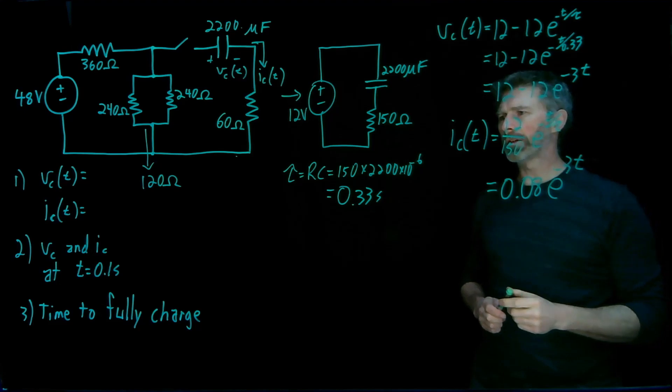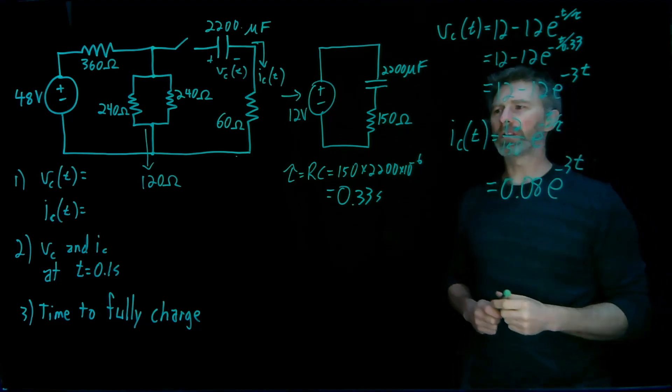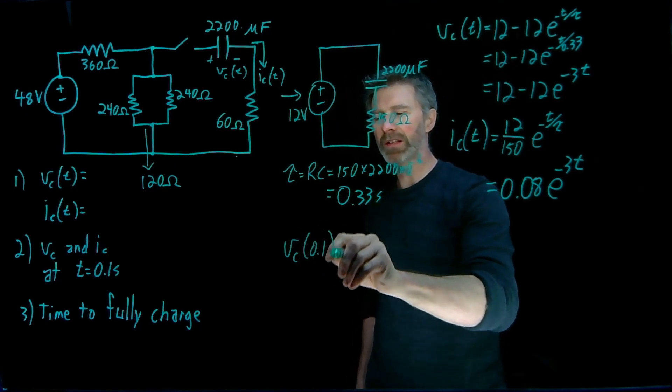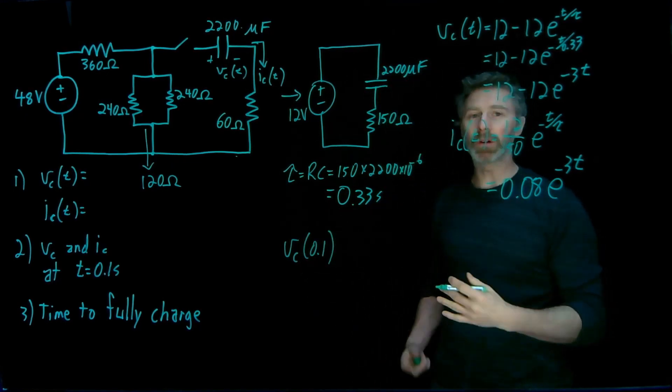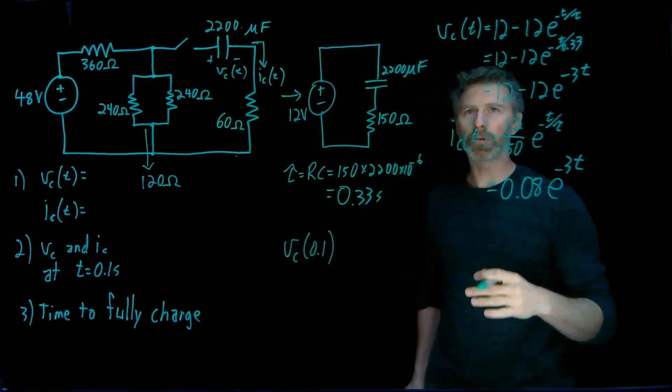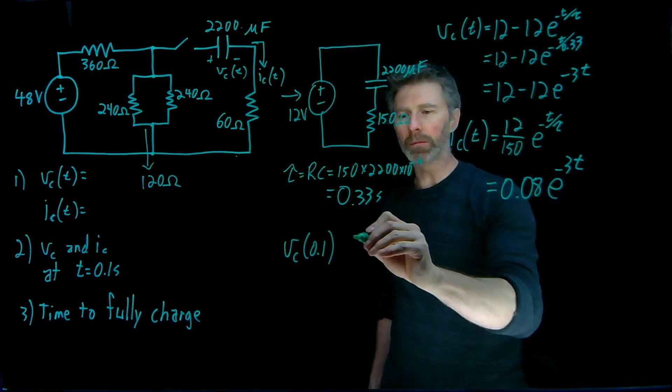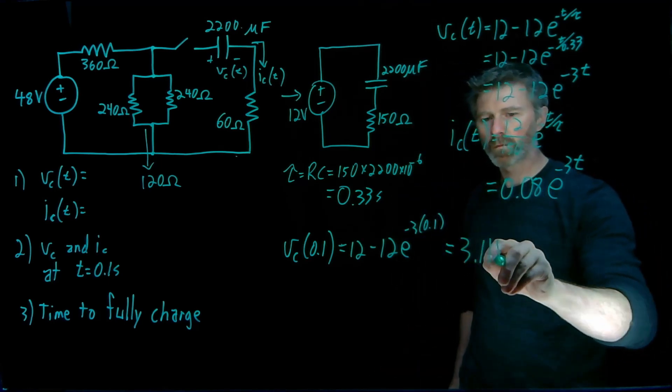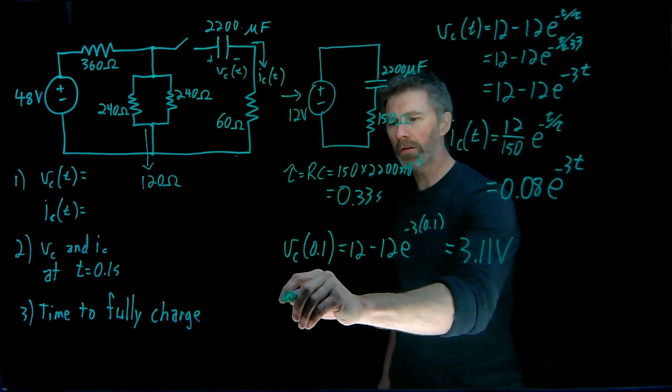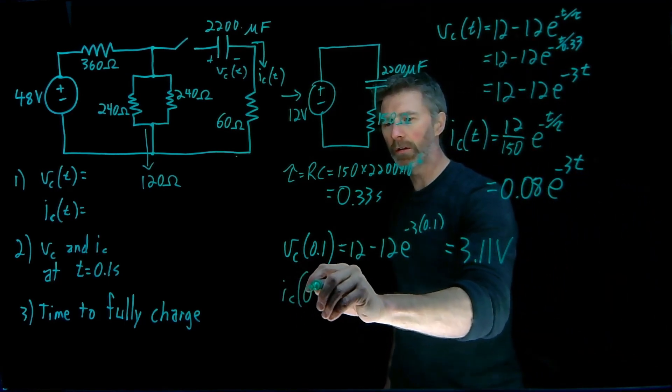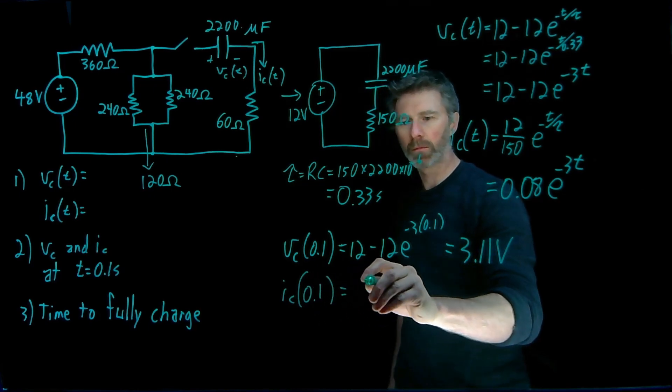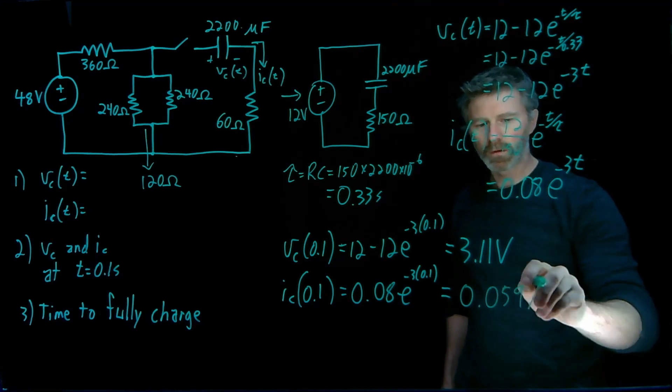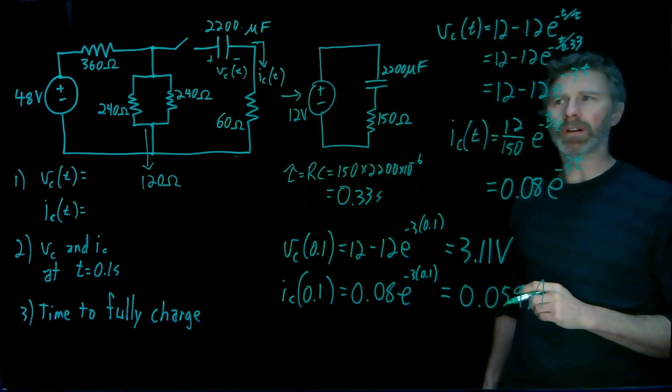Now, the last two parts of this problem are pretty simple now that I have the equations. vc at 0.1 seconds. Well, 0.1 seconds is not even one time constant yet, so it'll only have charged up a little bit, but we can plug the numbers in. We get 3.11 volts, and I can do the same thing for the current at 0.1 seconds. And we get 0.059 amps.